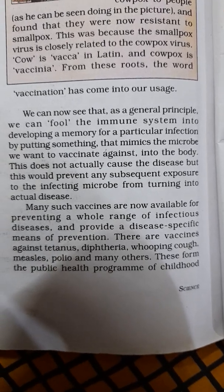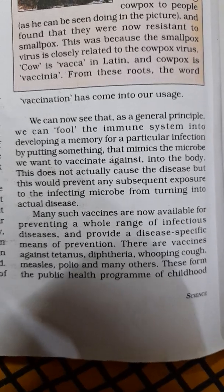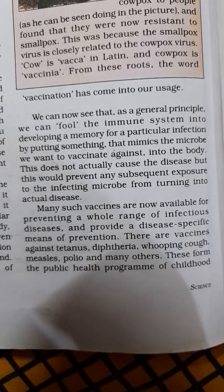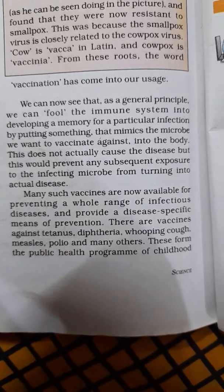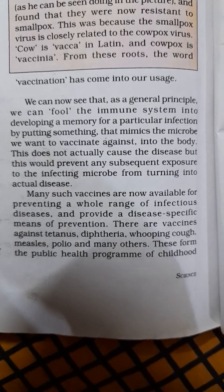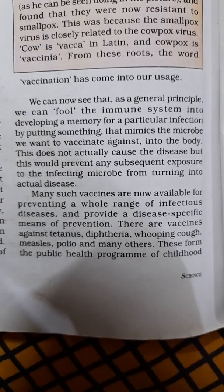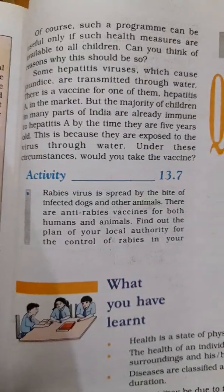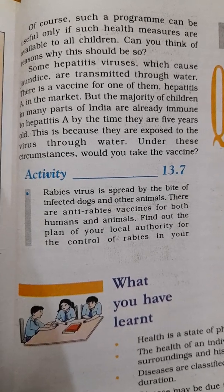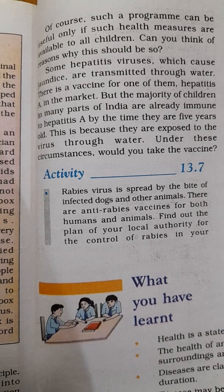In vaccinations, a weakened or dead microbe is inserted into the body. The body treats it as an active microbe, fights against it, and remembers it. Next time the actual microbe enters the body, the immune system is more sharpened and will react vigorously. Many such vaccines are now available for preventing a whole range of infectious diseases. There are vaccines against tetanus, diphtheria, whooping cough, measles, polio, and many others. There are public health programs for childhood vaccination, but these are useful only if health measures are available to all children. In rural areas, vaccines and health programs are not always easily available, and the government is working to reduce this problem.